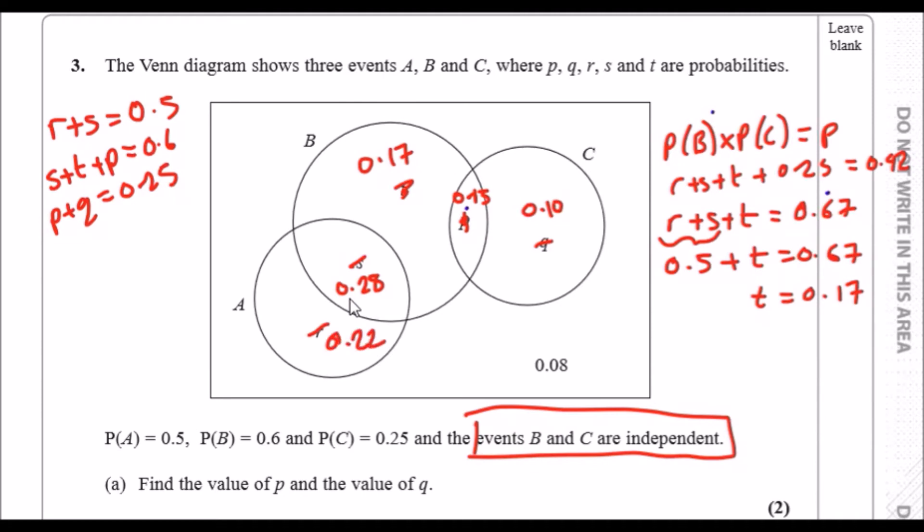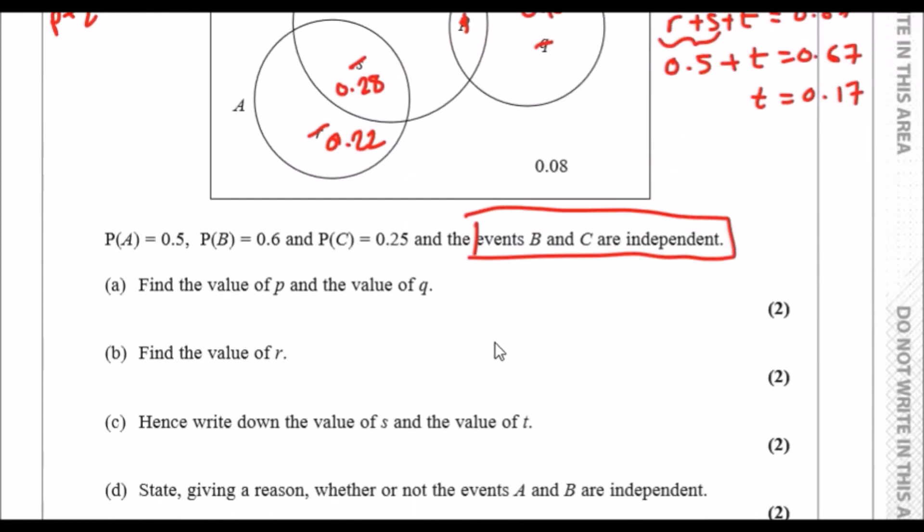Easy stuff guys, very easy. So that'll be A, B, C done. Now D is an interesting one. It says, state giving a reason whether or not the events A and B are independent.